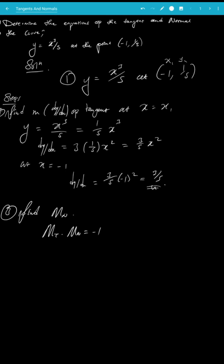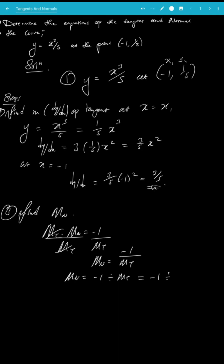We use the equation mt × mn = -1, meaning the gradient of the tangent times the gradient of the normal equals -1. We want mn, so mn = -1/mt. Since mt = 3/5, we get mn = -1 ÷ (3/5) = -1 × (5/3) = -5/3.